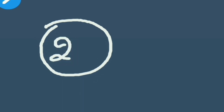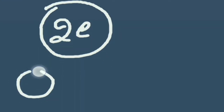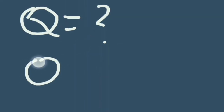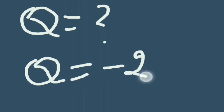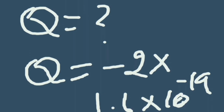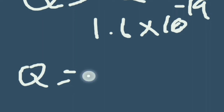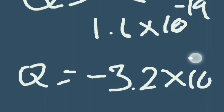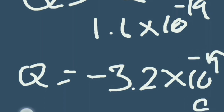Suppose यह एक body है और इस body पे 2 electrons हैं। Q की value — quantization of charge — formula है Q = ±ne। Electron के लिए minus लेंगे, n = 2, तो Q = −2 × 1.6 × 10⁻¹⁹ coulomb। 2 को 1.6 से multiply करने पर Q = −3.2 × 10⁻¹⁹ coulomb। यही उस body पर charge रहेगा।